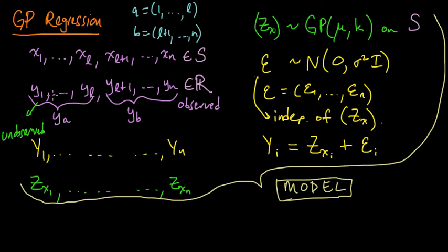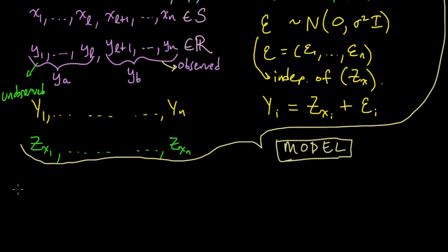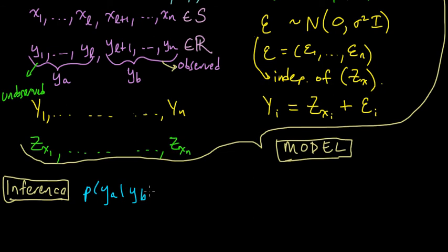Now, what do we want to do? To do inference, we want to get the posterior predictive distribution p(y_a | y_b). This also depends on the x's, but we drop that dependence since the x's are fixed, non-random quantities.